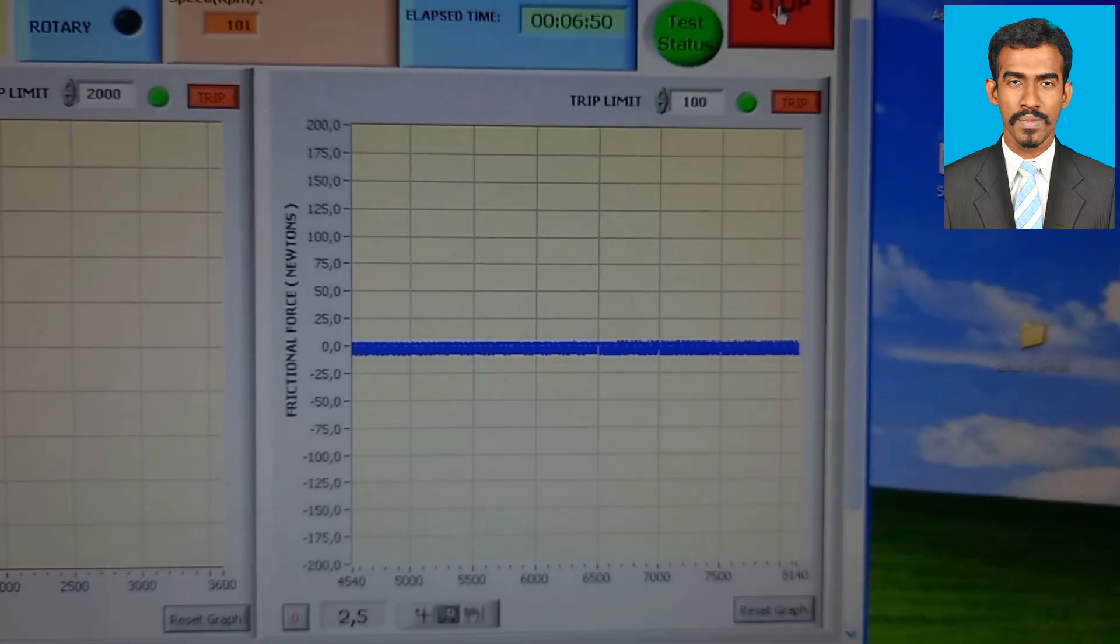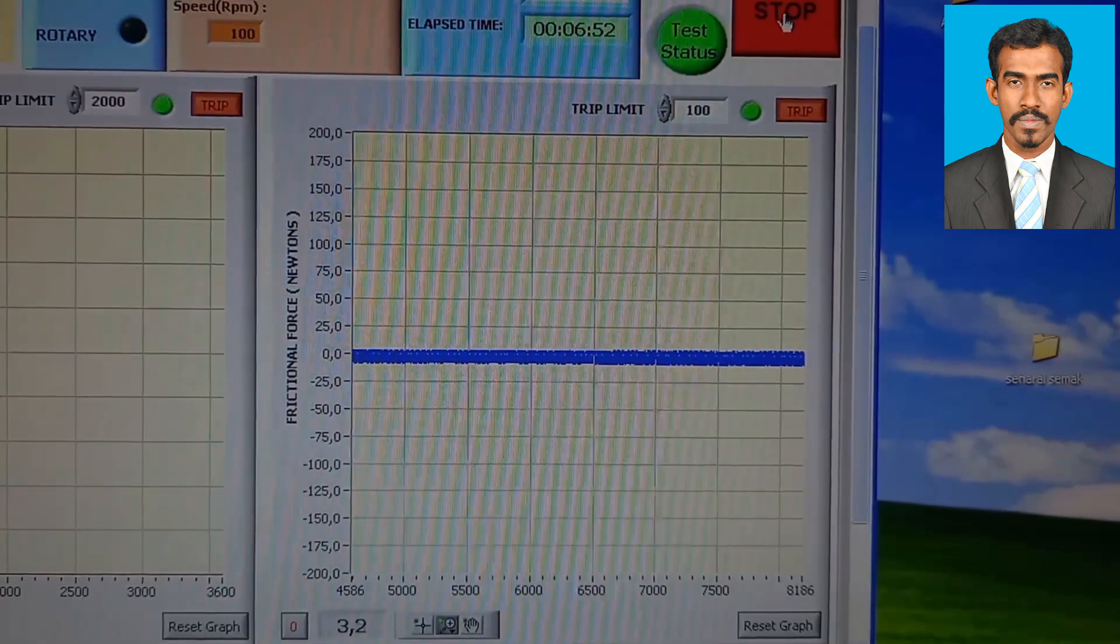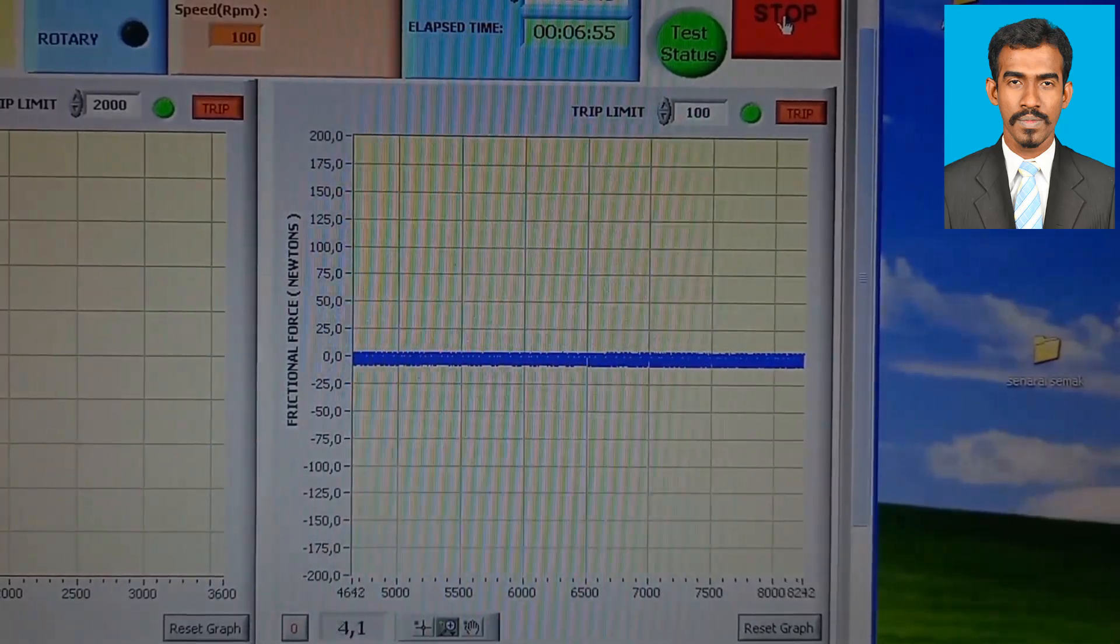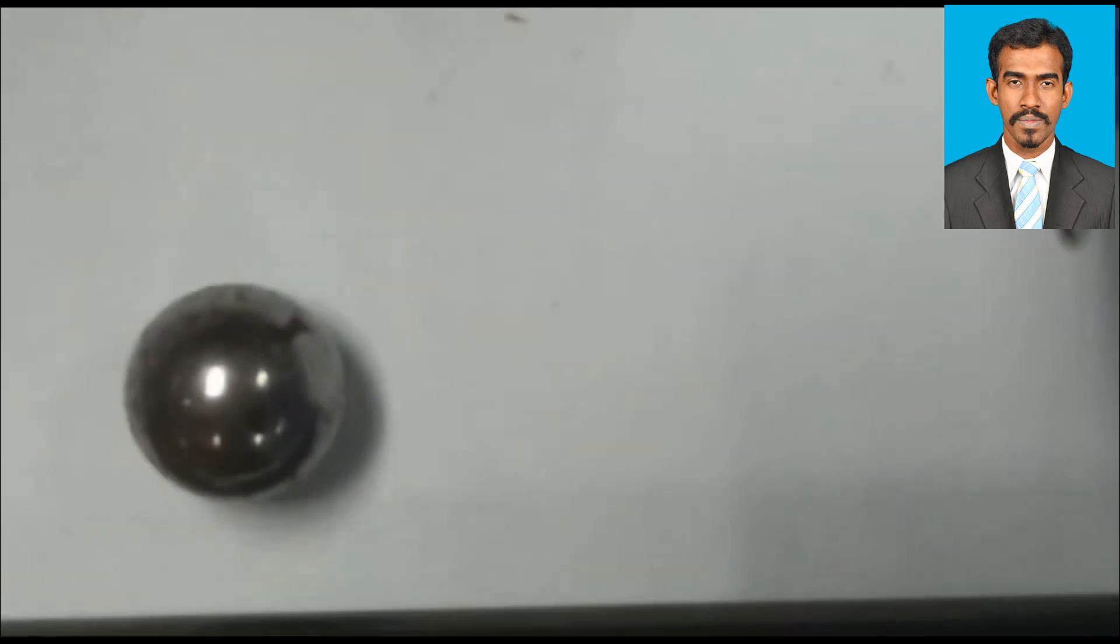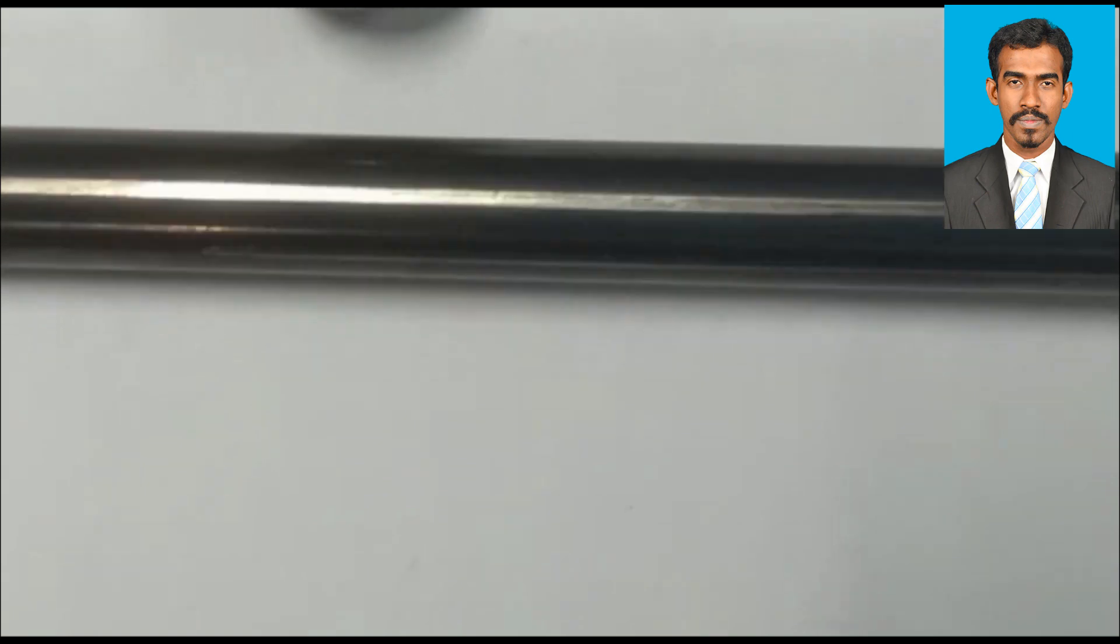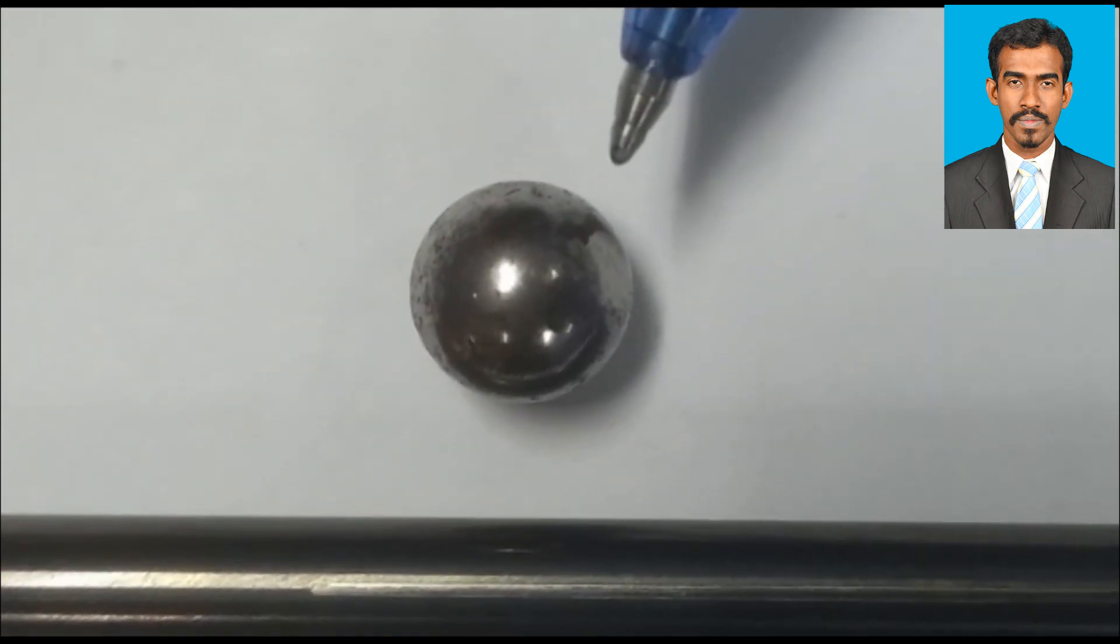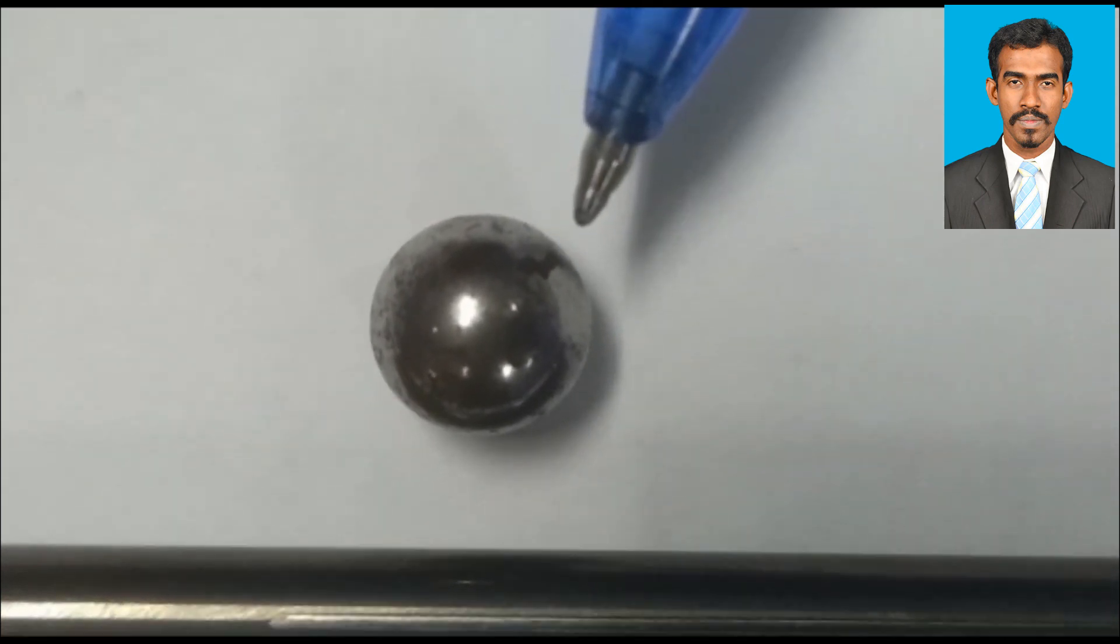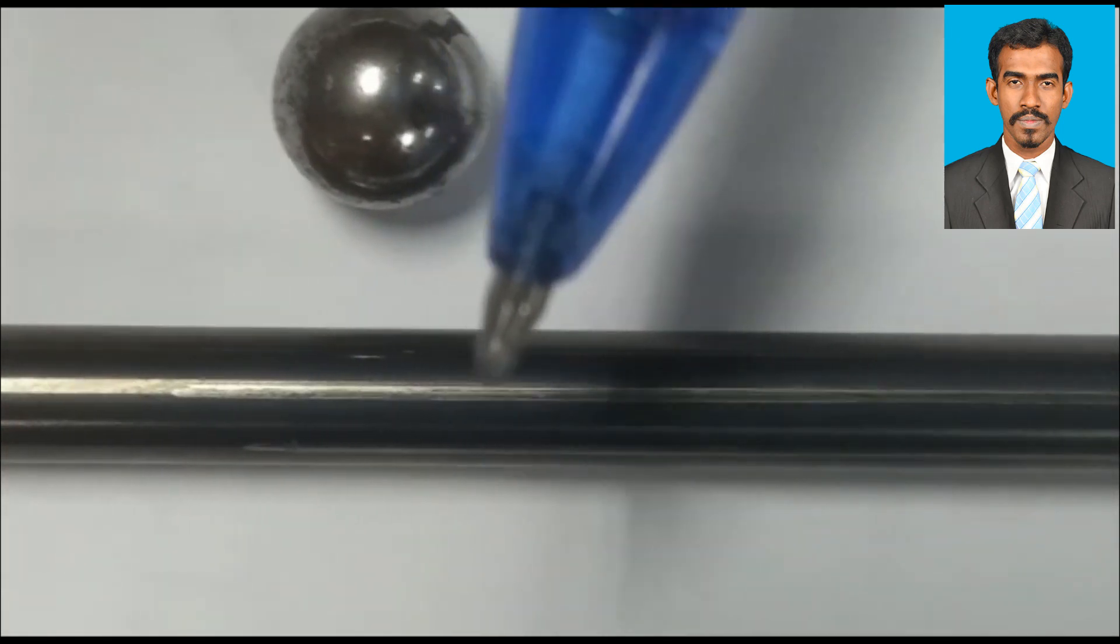After 16 minutes and 40 seconds, I'll obtain a graph like this. Then we'll remove the specimen and the ball. Here we can see that we are recording both the ball and the specimen. There are instances where wear occurs only on the ball or only on the specimen, depending on the hardness of these materials. In my experiment, the wear occurred on both the specimen and the ball, as you can see.